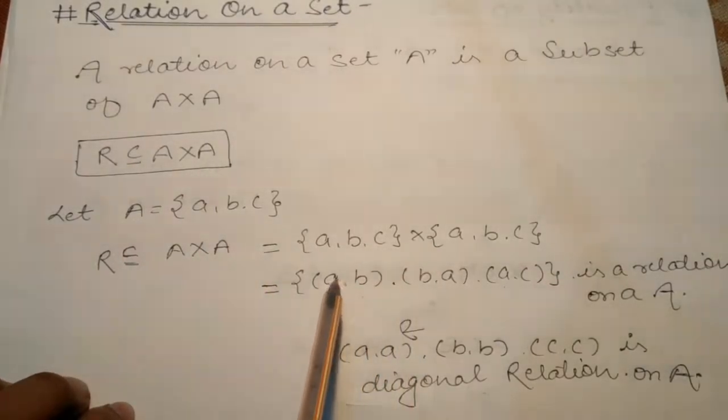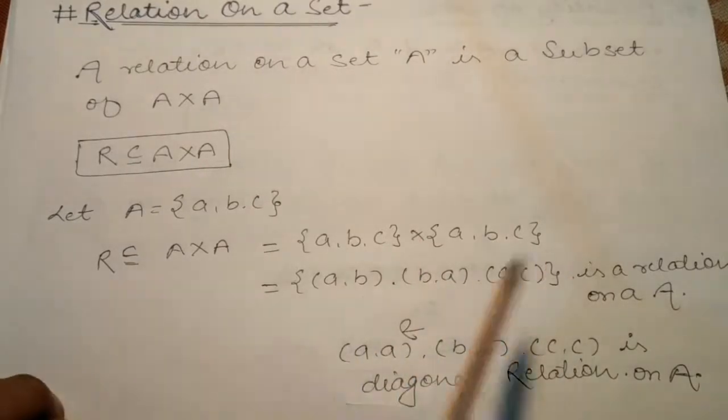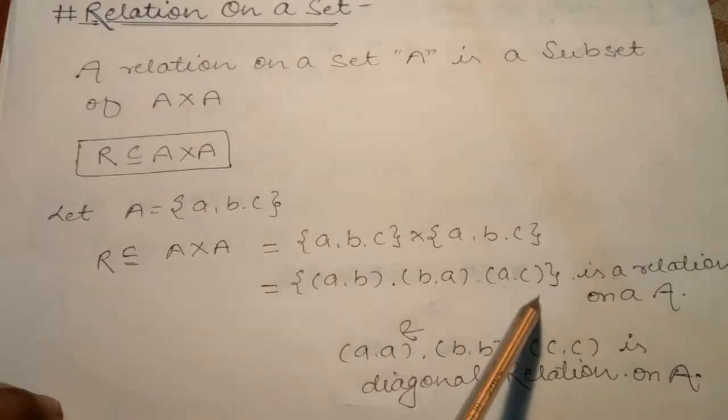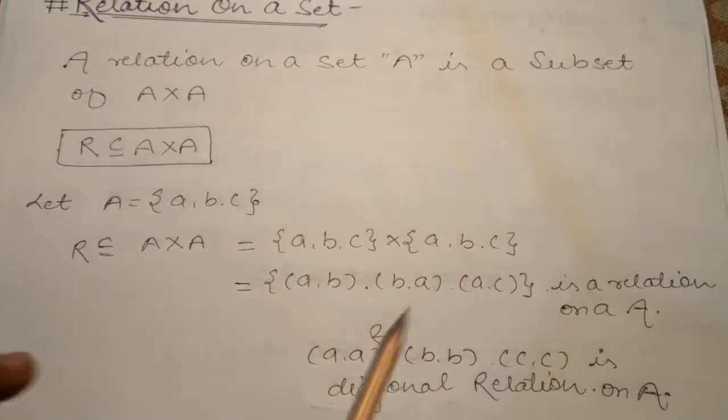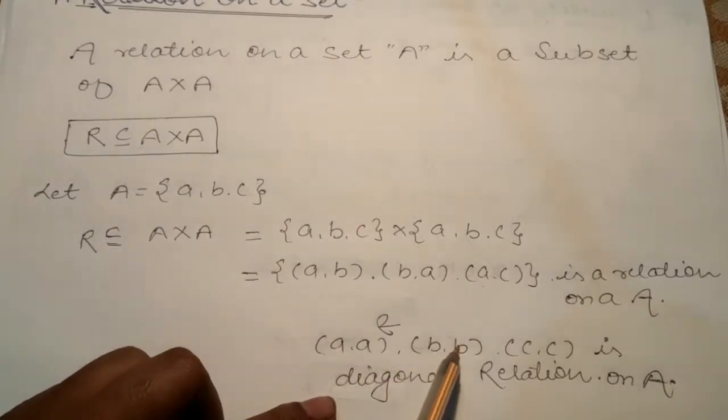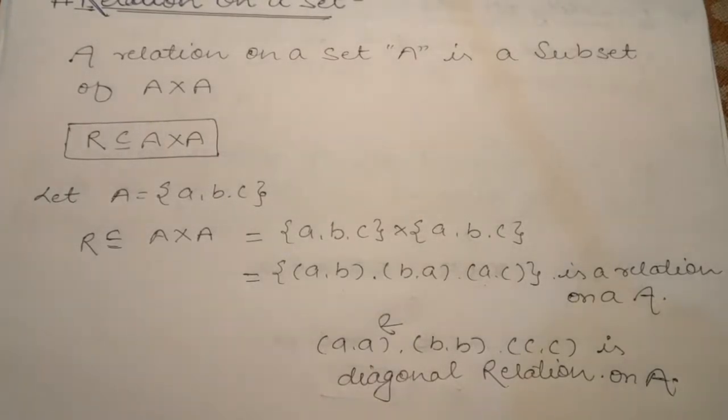When we write (a,a), (b,b), (c,c), this type of relation we call diagonal relation, which is the set which we have given.